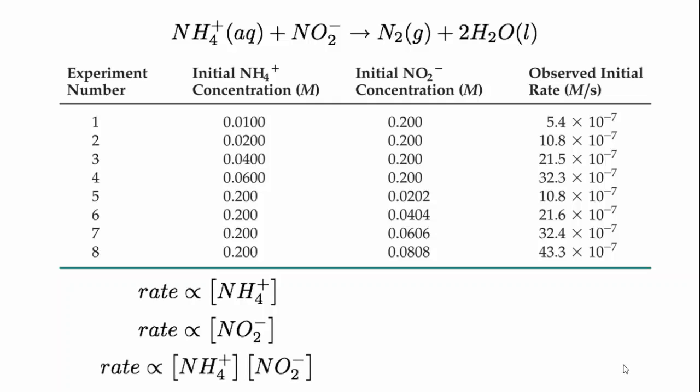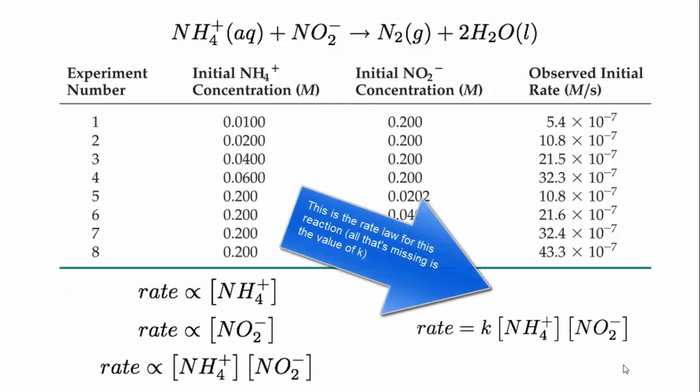And going further, we can say that to convert this expression into an equation, we need to multiply the concentrations by a proportionality constant, that's the rate constant, that will give us the actual value of the rate.